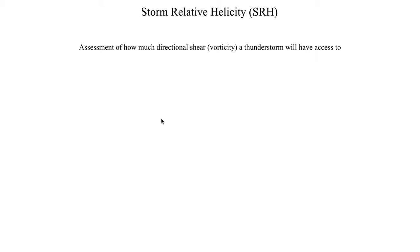Storm relative helicity is a number that assesses how much directional shear or vorticity a thunderstorm will have access to. The calculation for that usually involves looking at a hodograph, picking out two levels in the atmosphere that you're interested in, shading an area, and then calculating the area that you've shaded.